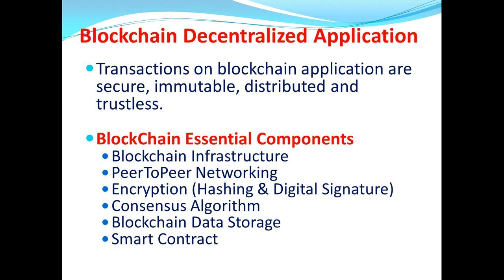Now having seen both centralized and decentralized architectures, let's look at a basic definition of the blockchain concept. Transactions on a blockchain application are secure, immutable, distributed, and trustless. These are the four key properties we will be discussing in our upcoming videos.